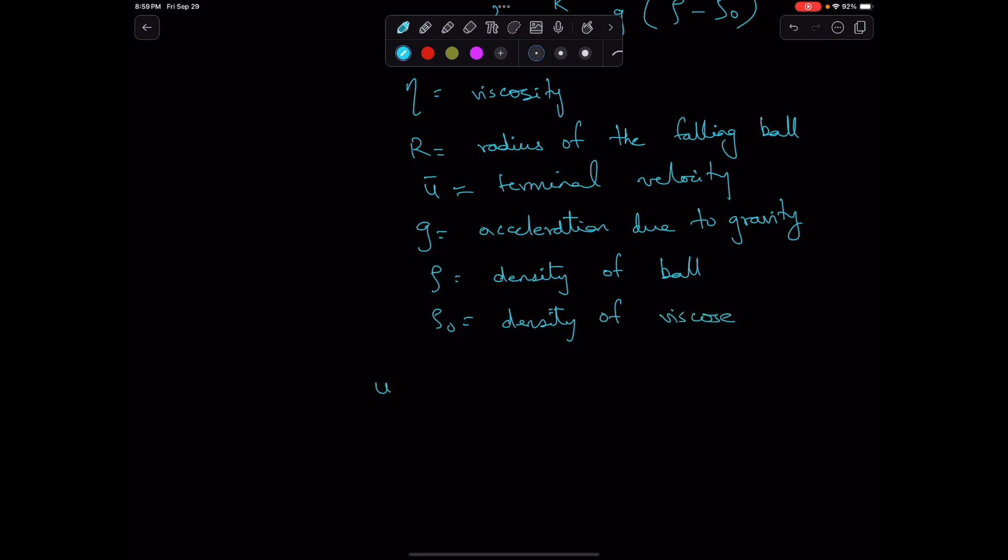The terminal velocity u bar, we can divide the distance traveled, 10 centimeters, by the time taken, 324 seconds, and that gives us 0.031 centimeters per second.